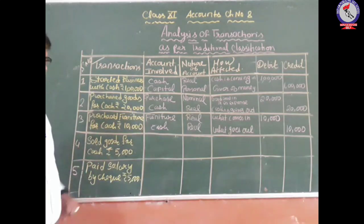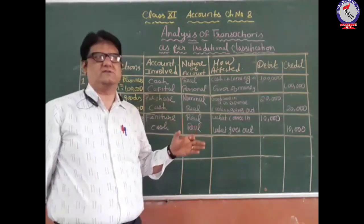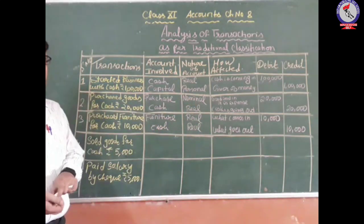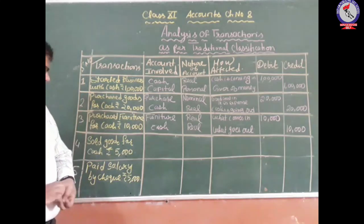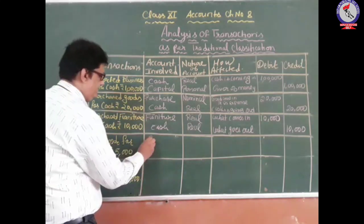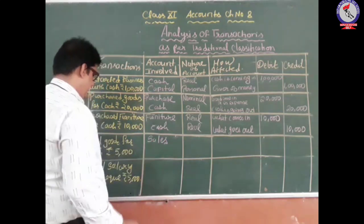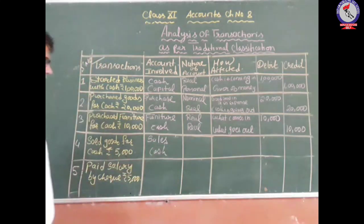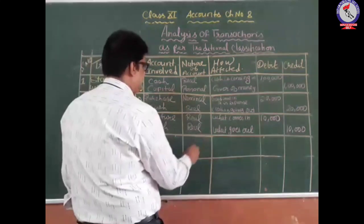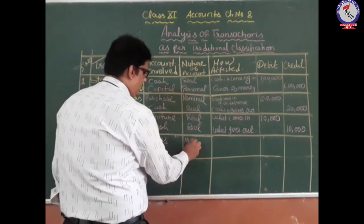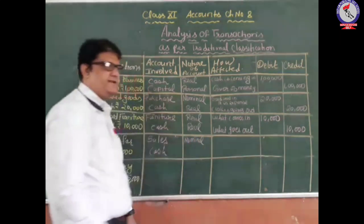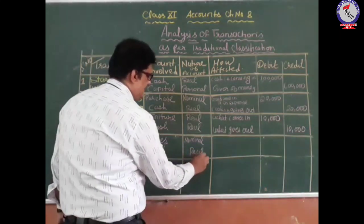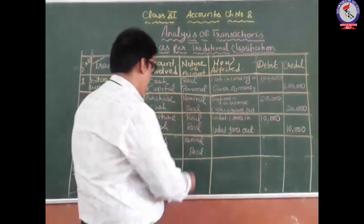Fourth transaction: sold goods for cash. We have sold the goods which we had purchased for the purpose of reselling. The two accounts involved are sales and cash. Sales is an example of the nominal category account because when we sell goods, we generate revenue — it is income for us. Cash is an example of the real category account. In the sale, goods go out and income is generated, while cash comes in.